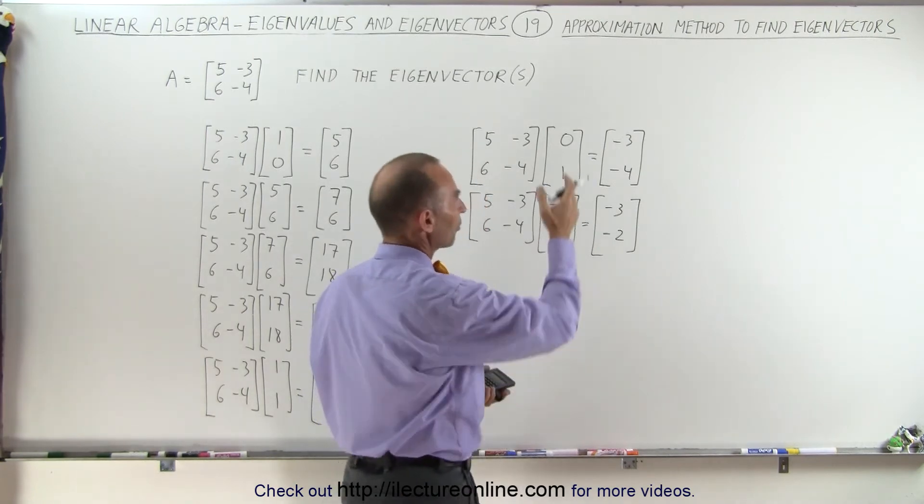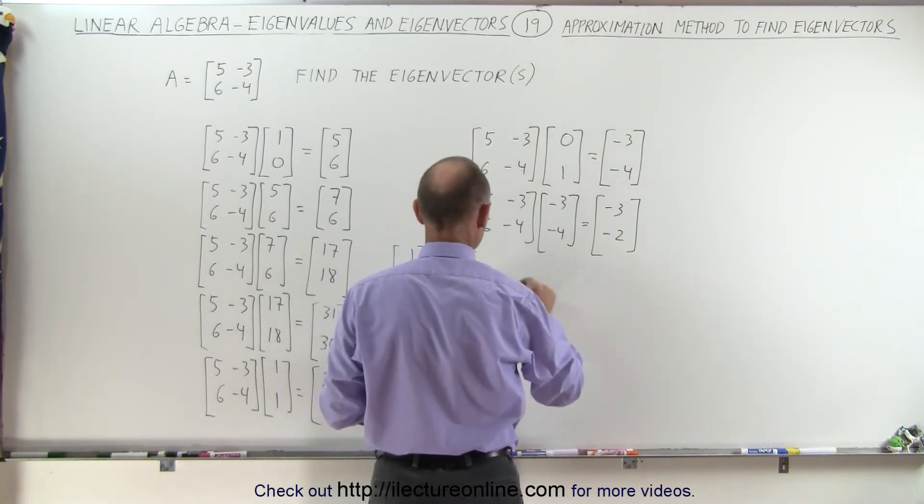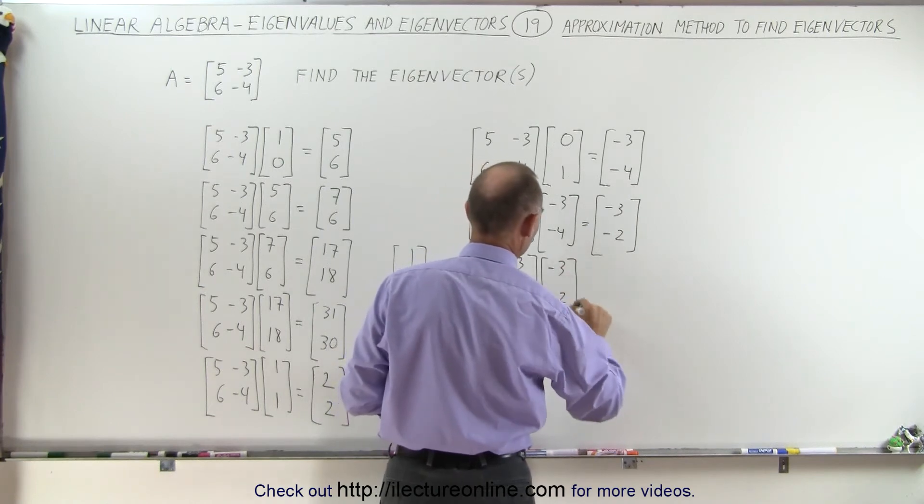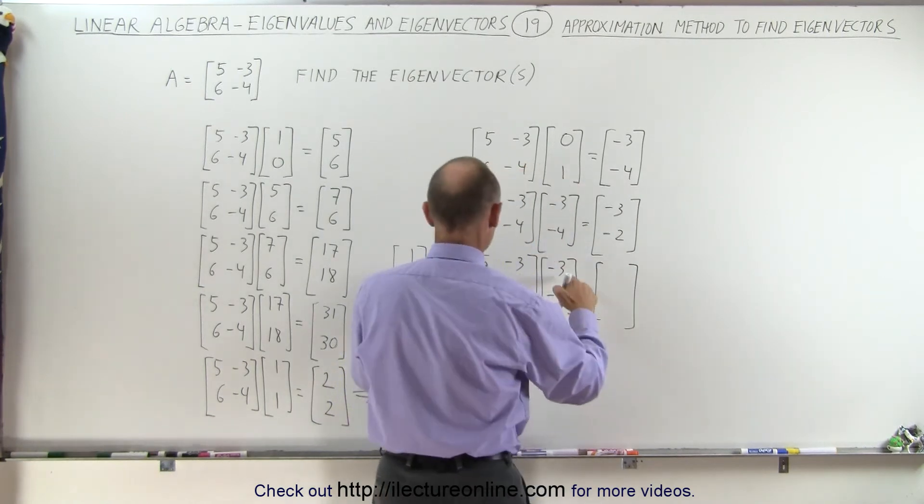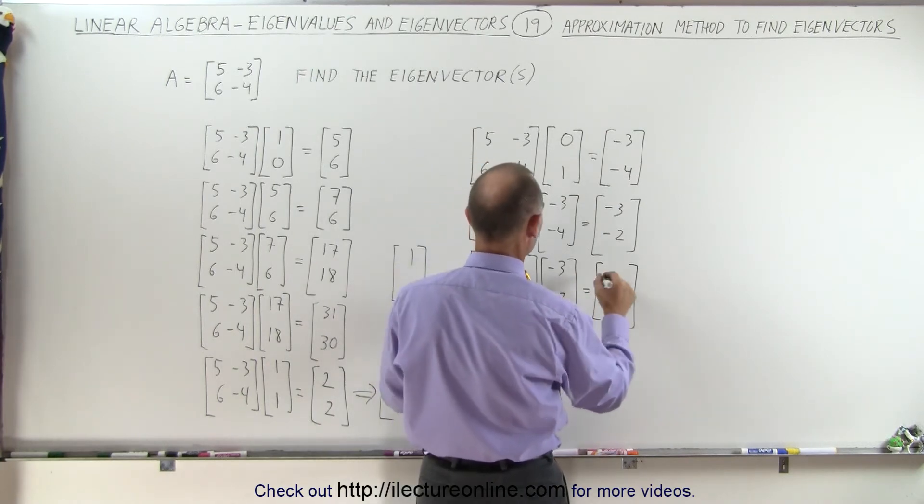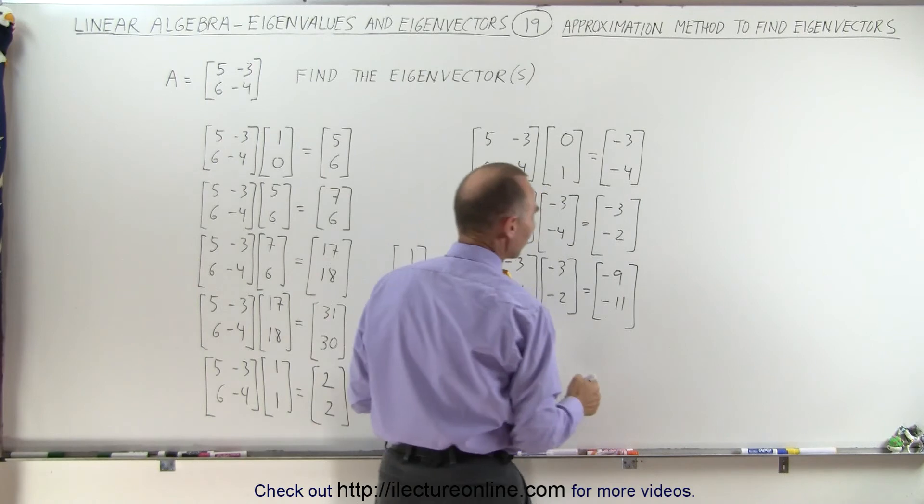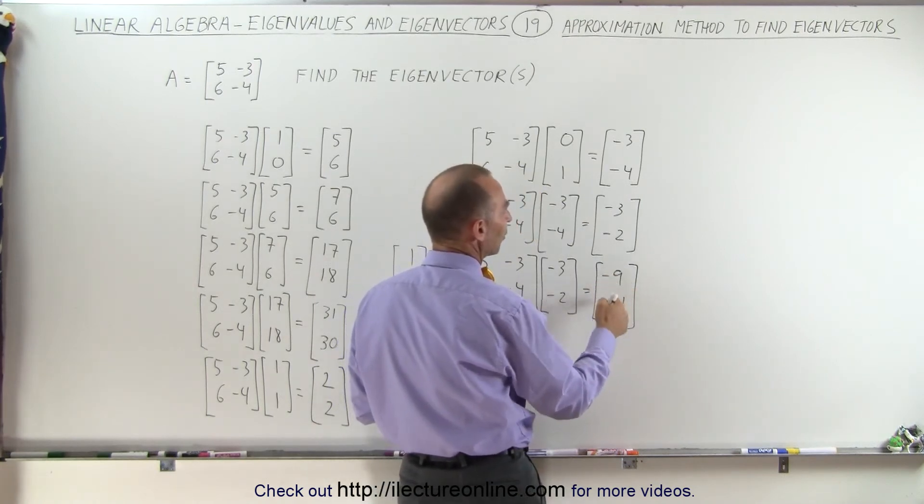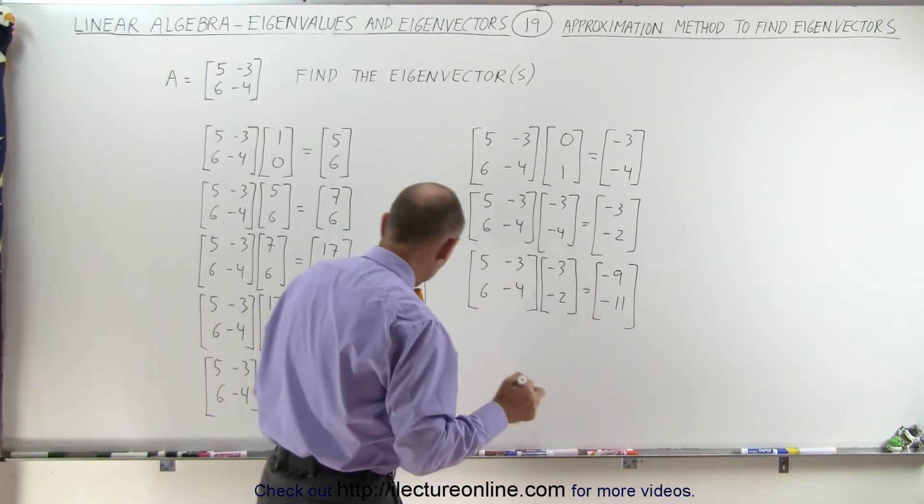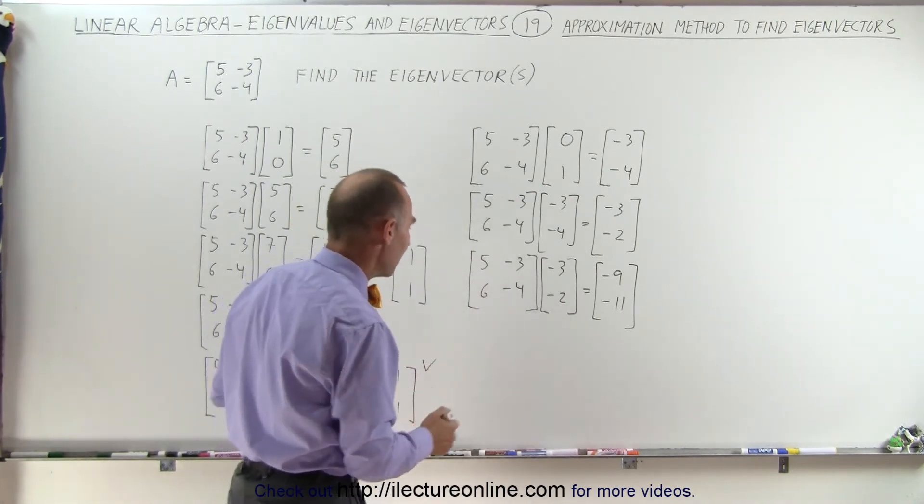Hmm, so here it went from 3 and 4 to 3 and 2. All right, let's go one more step, see what we get. 3, 6, and minus 4, multiply times minus 3 and minus 2. And the following we get, that's minus 15 plus 6. Minus 15 plus 6 is minus 9. And here we get minus 18 plus 8, that's minus 11. So now notice that's minus 9 over minus 11. If I multiply both the top and the bottom by minus 1, I get 9 and 11, that's very close again to 1 and 1. I'm beginning to suspect that I'm again zeroing in on that same eigenvector.